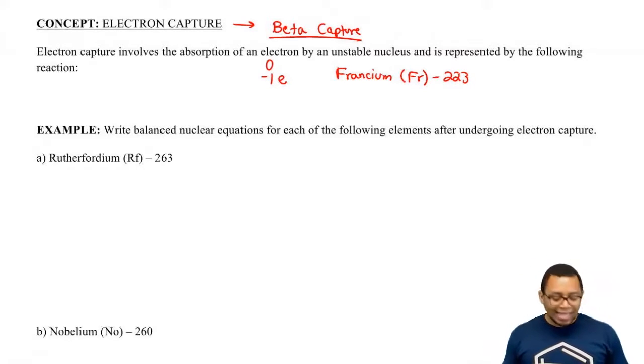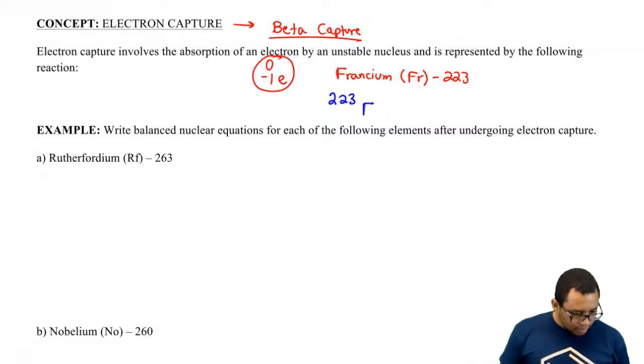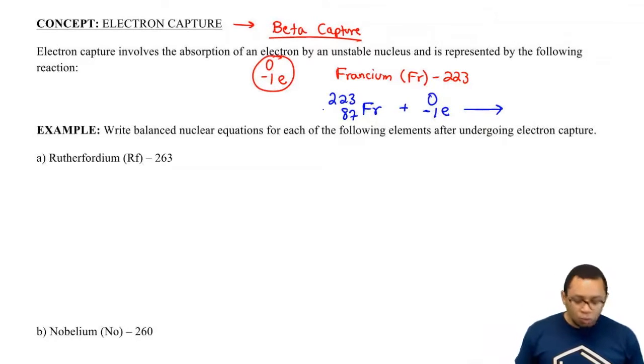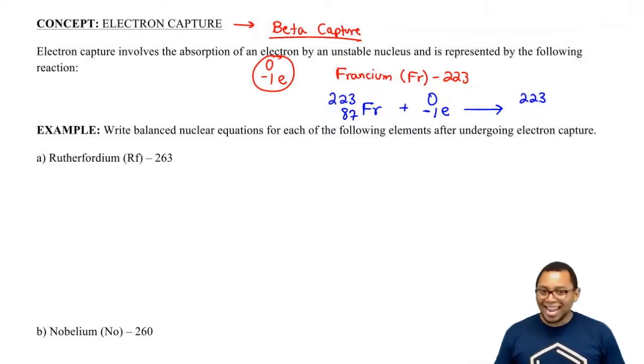So here capture means that this electron is not going to be a product, but it's going to be a reactant. So we're going to have francium-223 and francium has an atomic number of 87. We're going to absorb an electron. What effect is that going to do? Well, it's going to be 223 plus 0 gives me 223 and then 87 minus 1 is going to give me 86.